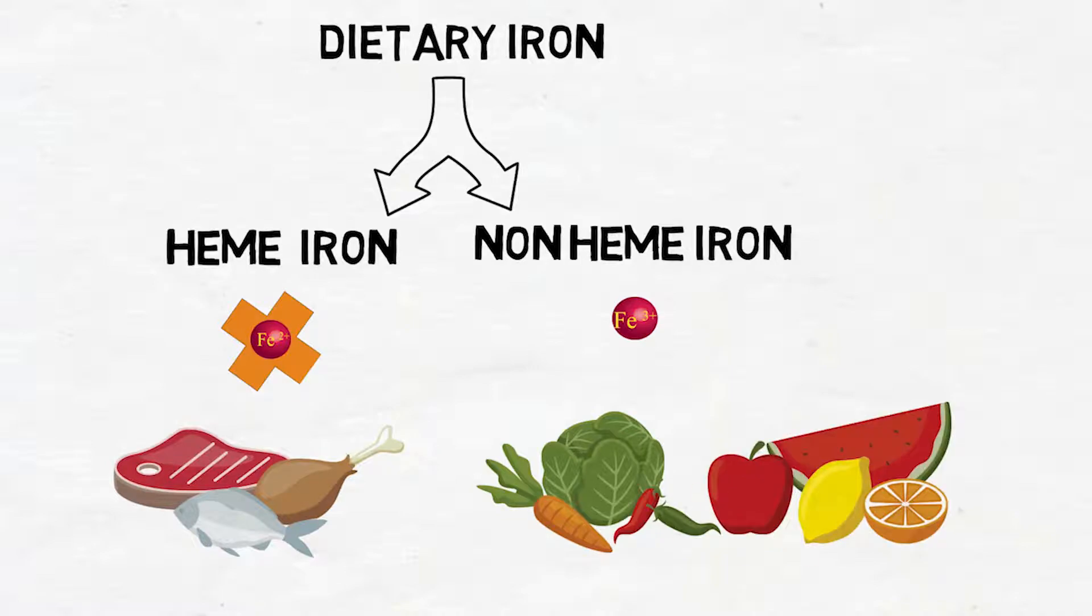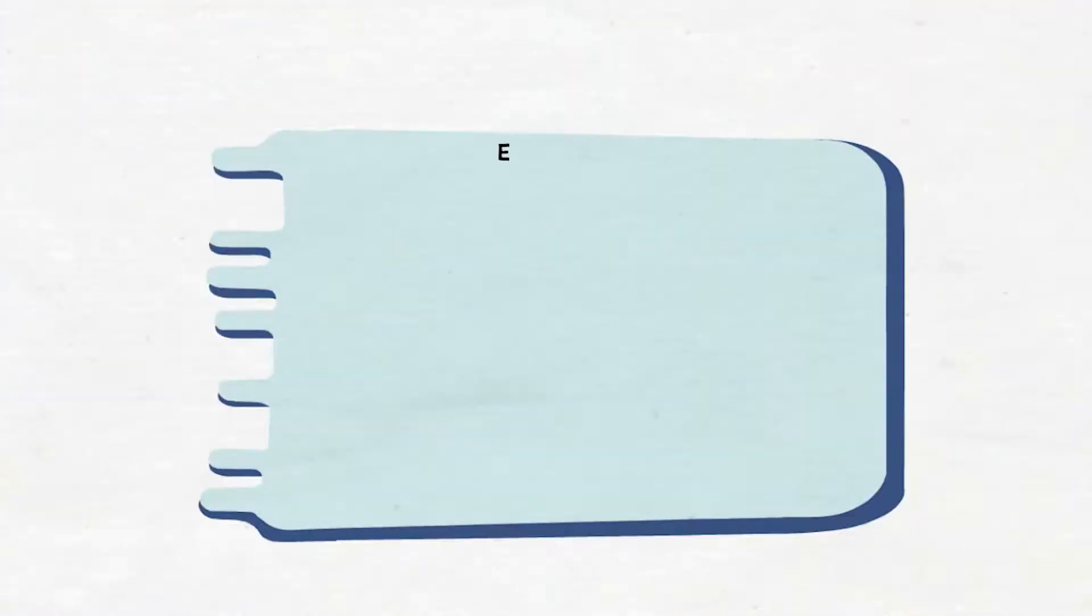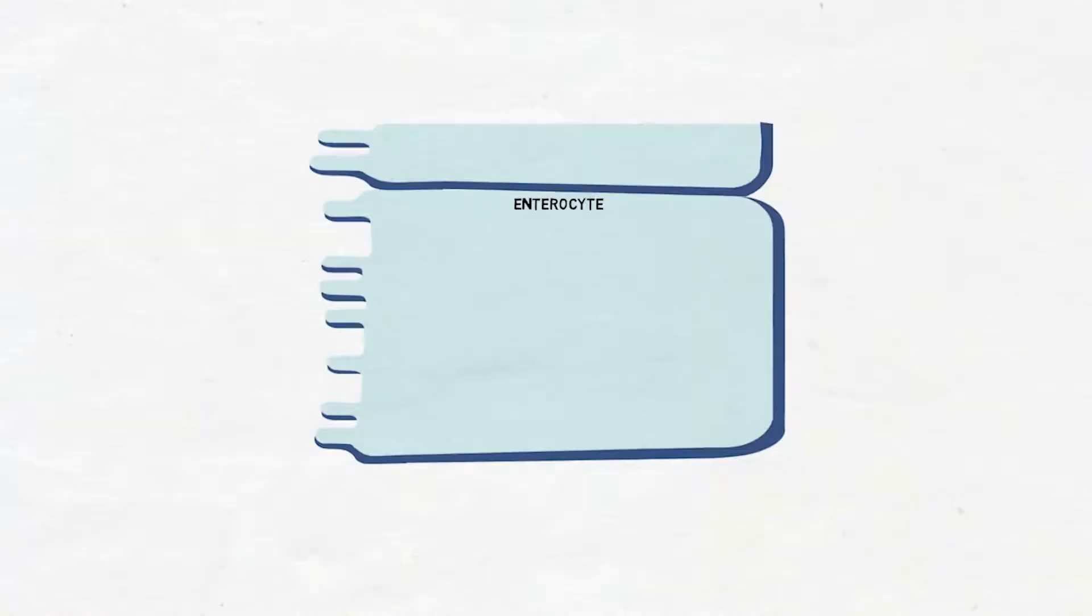The absorption of most dietary iron occurs in the duodenum and the proximal jejunum. Let's go back to the small intestine here and zoom in. Here I'm drawing intestinal cells known as enterocytes. Here there is the lumen of the small intestine.